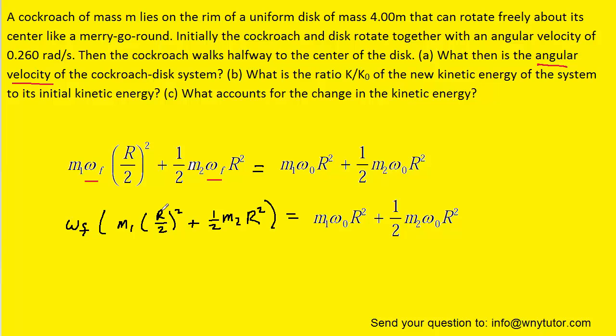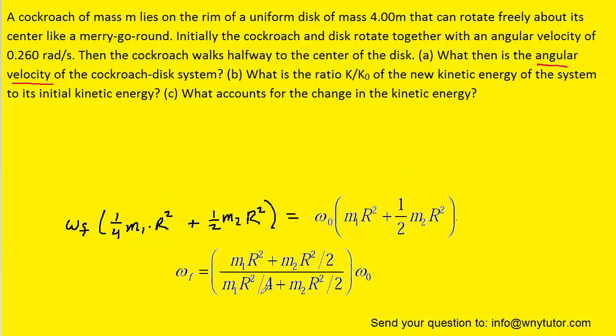We could then square the term R divided by 2. On the right side, we can factor out the initial angular velocity. Let's call this term over here one-fourth mass one times radius squared. And then we'll divide both sides of the equation by this term in parentheses. If we wish to simplify the cluster of terms in parentheses, we can divide out an R squared from each of those terms.